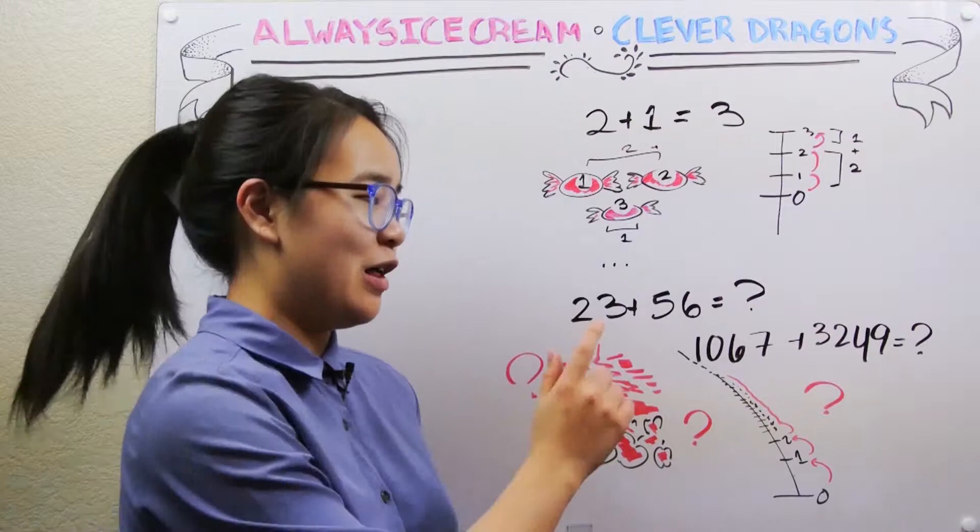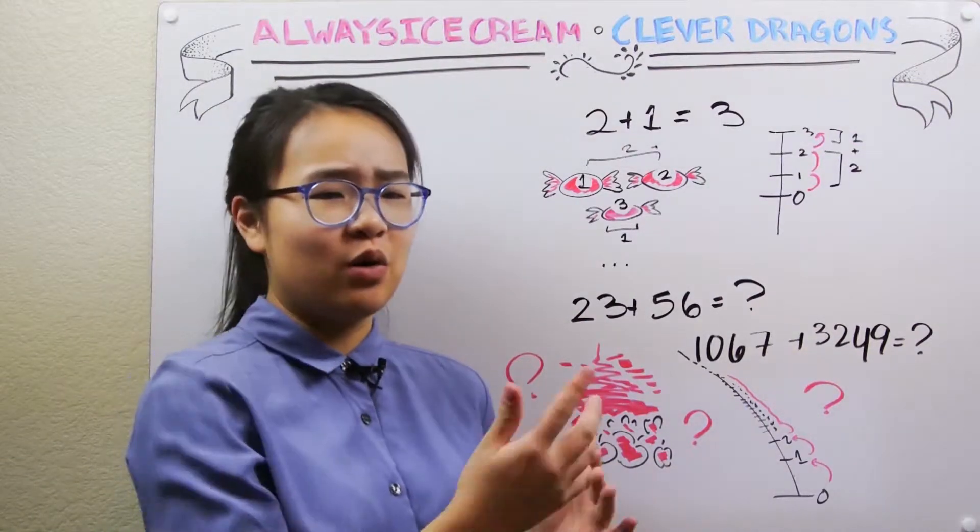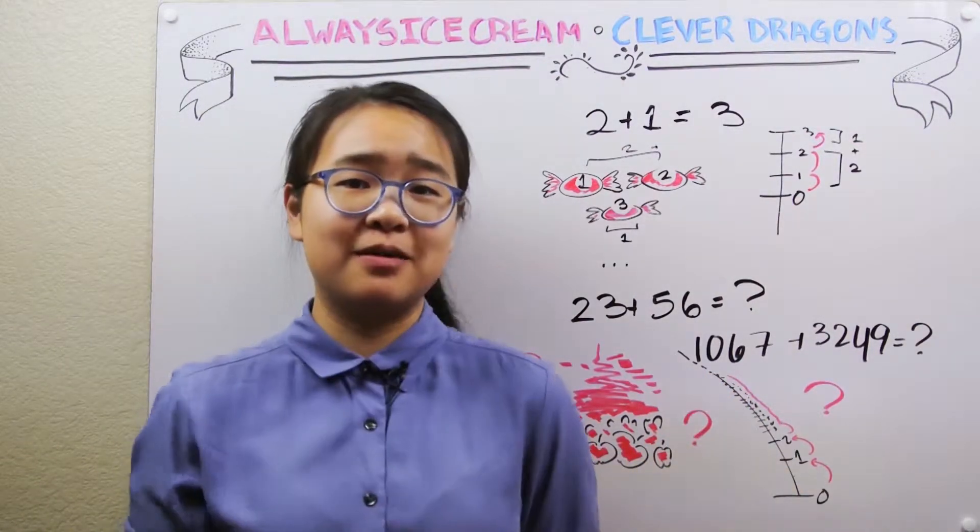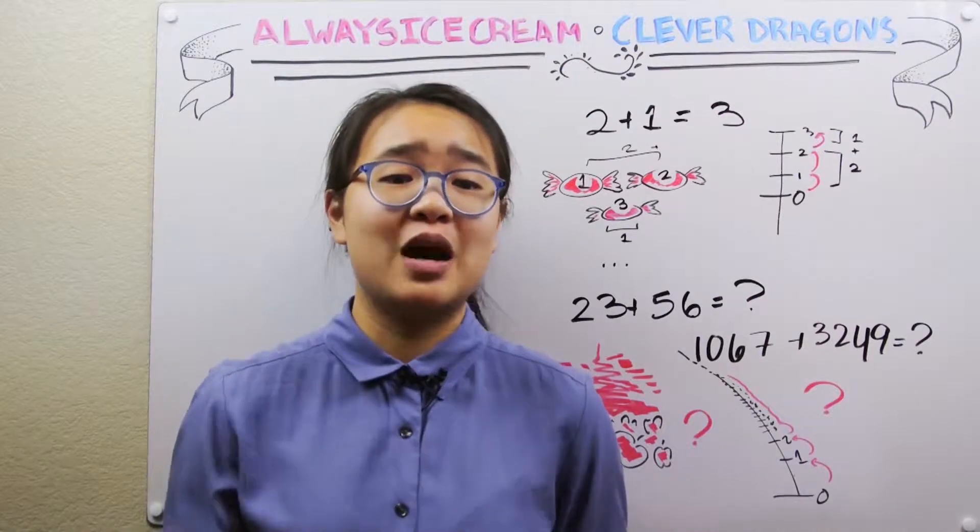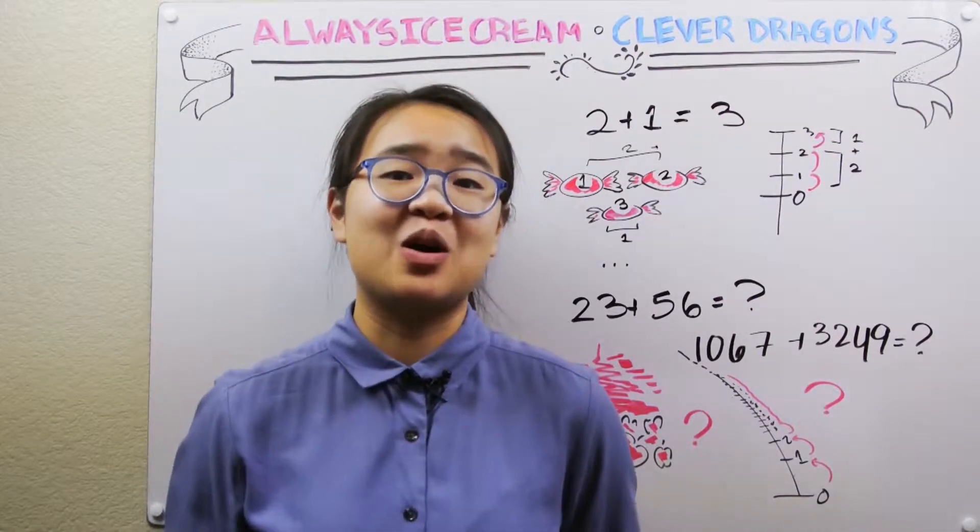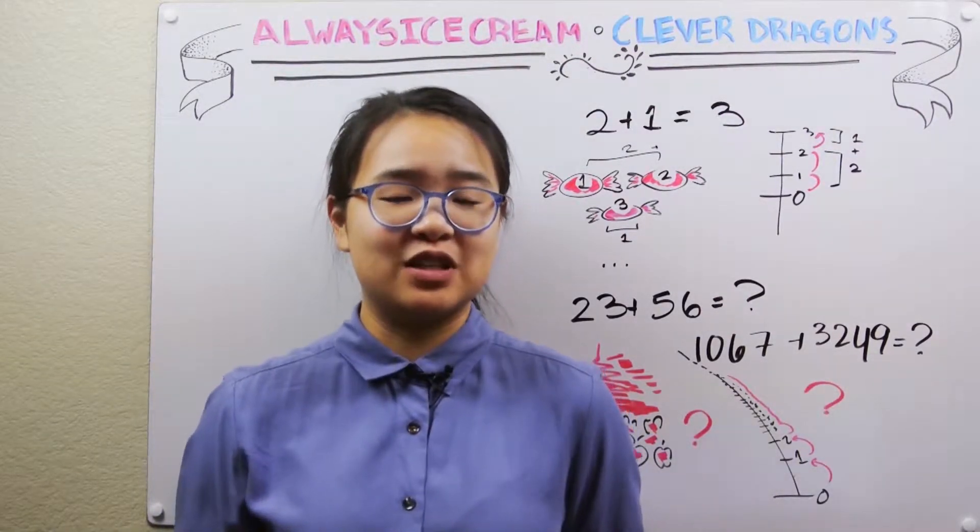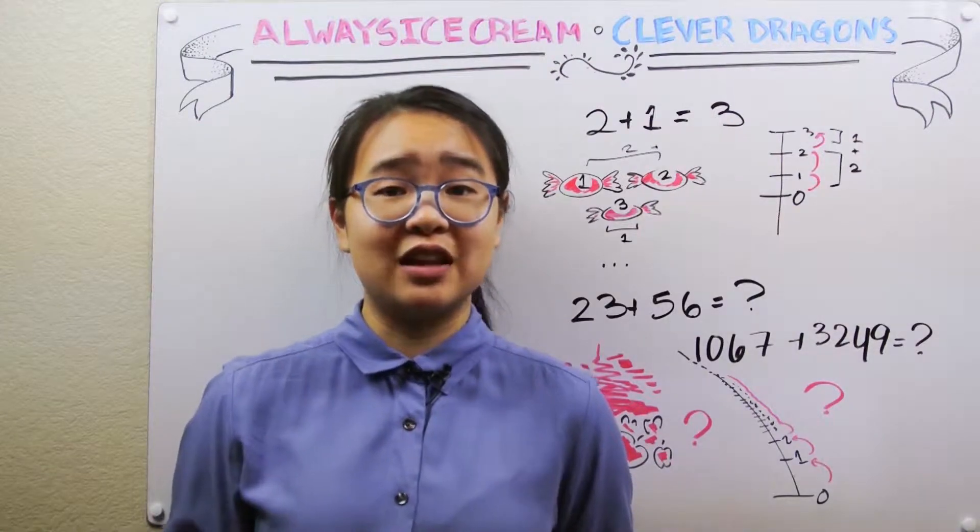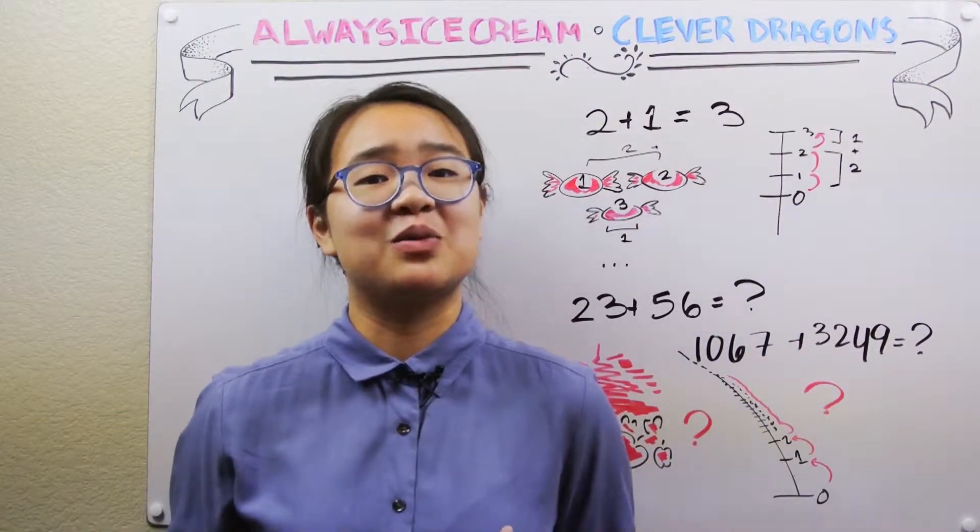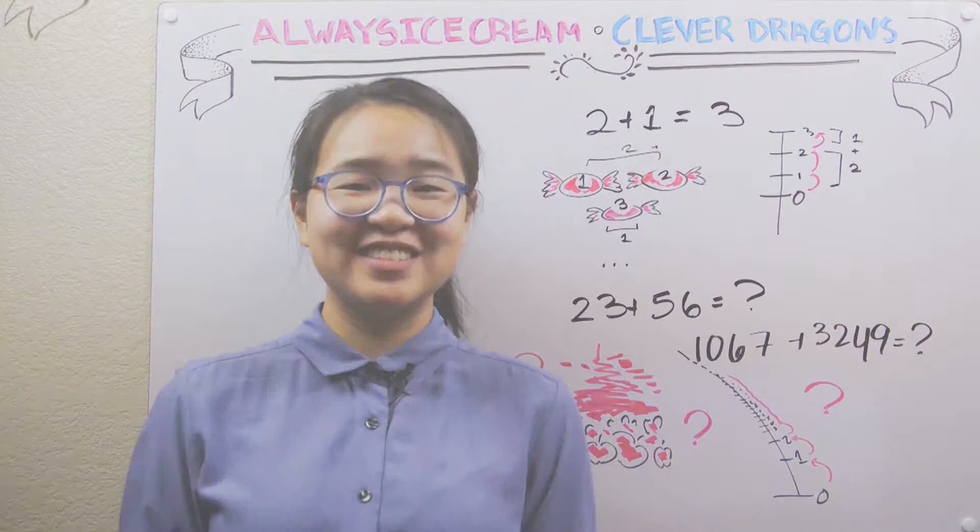Well, there's no way we're going to draw that many apples and count them, or even jump that many times up the number line. However, people do add these numbers, and even bigger ones, all the time, and without much difficulty. In order to figure out how they do that, let's take a step backwards and talk about something we call the decimal system.